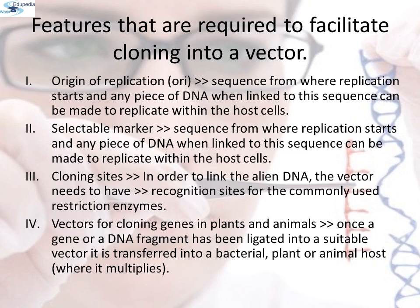Cloning sites: in order to link the alien DNA, the vector needs to have very few, preferably single, recognition sites for the commonly used restriction enzymes. Presence of more than one recognition site within the vector will generate several fragments, which will complicate the gene cloning.